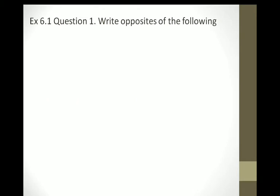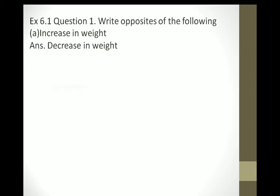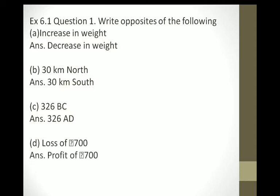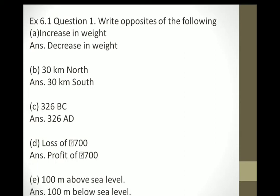Question number 1: Write opposites of the following. Increase in weight — the opposite is decrease in weight. 30 km north — its opposite is 30 km south. You know the variable opposites: increase/decrease, north/south. 326 BC means before Christ, and 326 AD. Loss of 700 — profit of 700. 100 meter above sea level — its opposite is 100 meter below sea level.